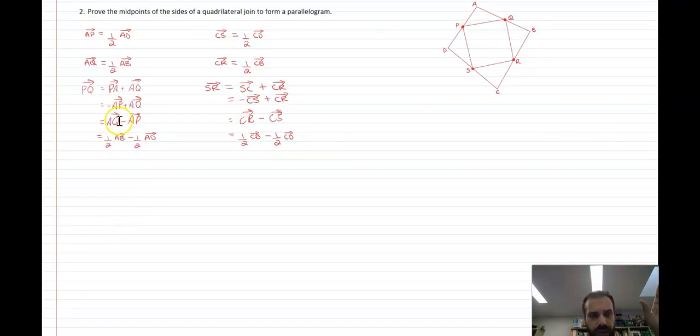After that, we can just say, well, AQ, in the beginning, I said AQ was half AB, so let's sub that in there. AP is half AD, so negative half AD there. And then over here, we're living like parallel lives left and right. CR we know is half CB, and CS is equal to half CD. So let's sub all that in.